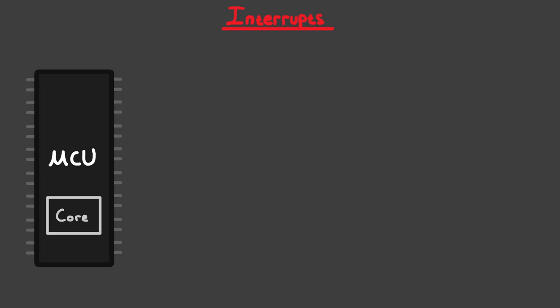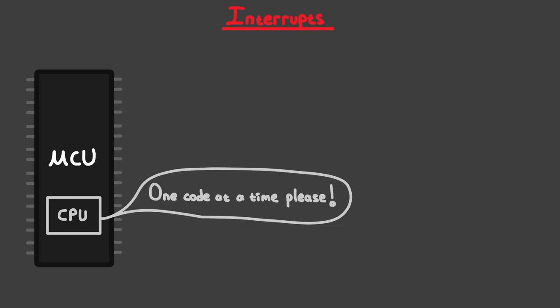First things first, what are interrupts? The name is pretty self-explanatory, actually — they interrupt your microcontroller. Most microcontrollers, especially the 8-bit ones like the one we're using, will have a single core. When I say core, I'm referring to the CPU. Microcontrollers are essentially small, low-powered computers, so they also contain CPUs, meaning processing units. One core means the microcontroller can only handle one process, or one code, at a time.